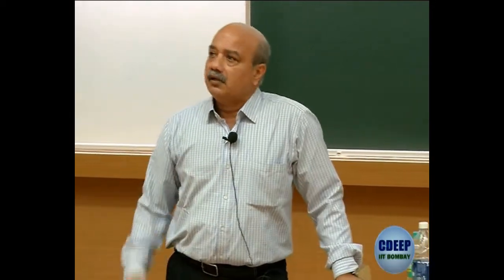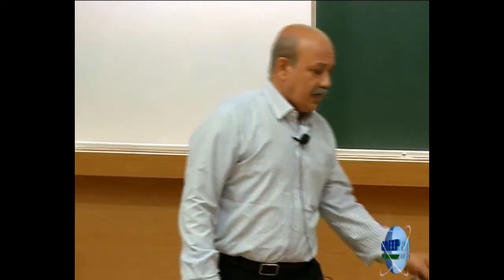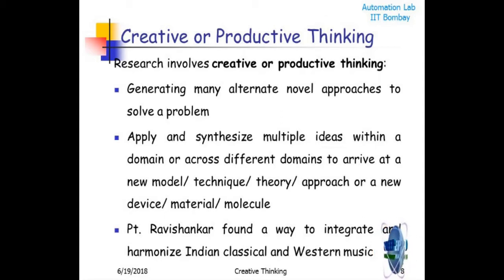I am going to begin with non-technical examples and move to technical examples mostly in tomorrow's lecture. The first example I am taking is Pandit Ravi Shankar. There are many accomplished musicians in India, but one name that stands out is Pandit Ravi Shankar. He was able to synthesize - merge the western classical music tradition with the Indian music tradition. He was very creative. He created music by merging the two and made Indian music and Indian instruments popular in the west. He could harmonize between two different traditions, and that required creativity.